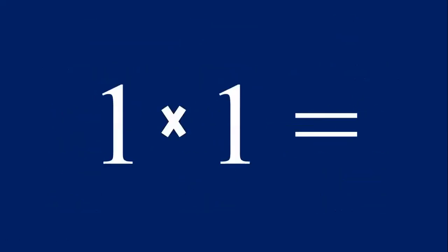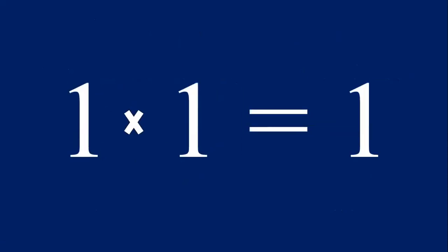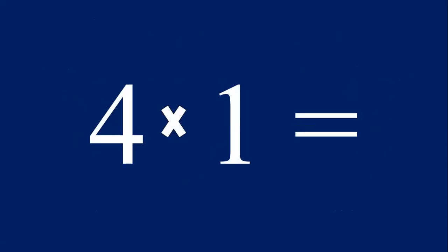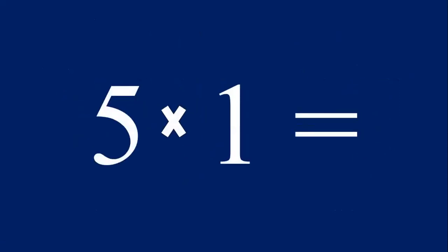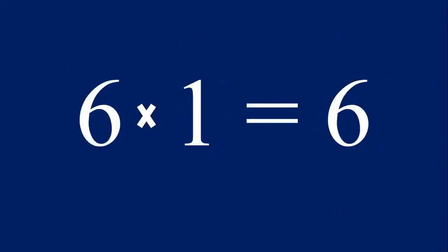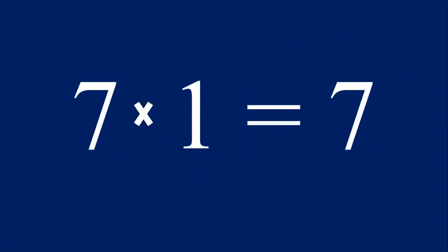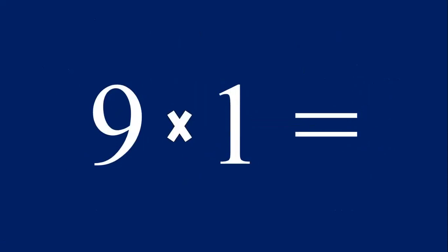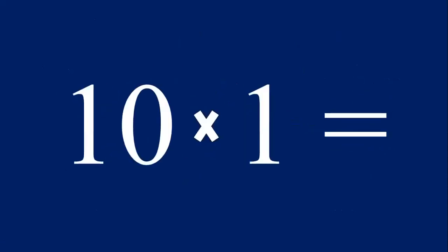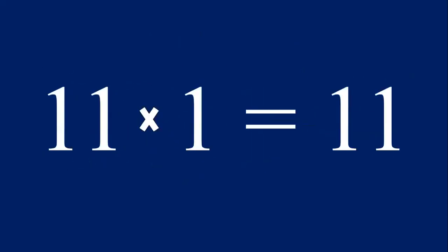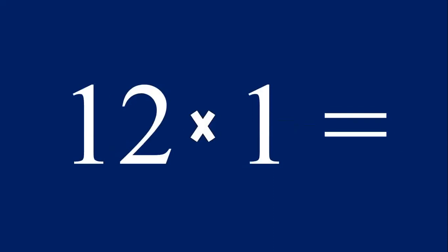Say these with me. One times one equals one, two times one equals two, three times one equals three, four times one equals four, five times one equals five, six times one equals six, seven times one equals seven, eight times one equals eight, nine times one equals nine, ten times one equals ten, eleven times one equals eleven, and 12 times one equals 12.